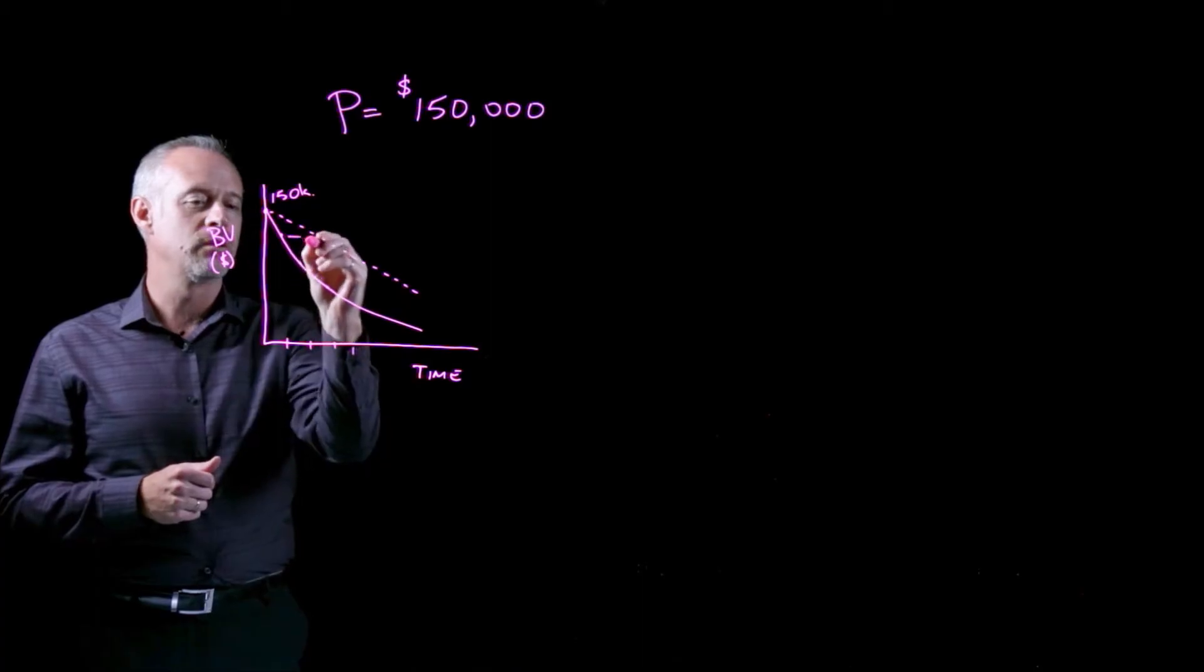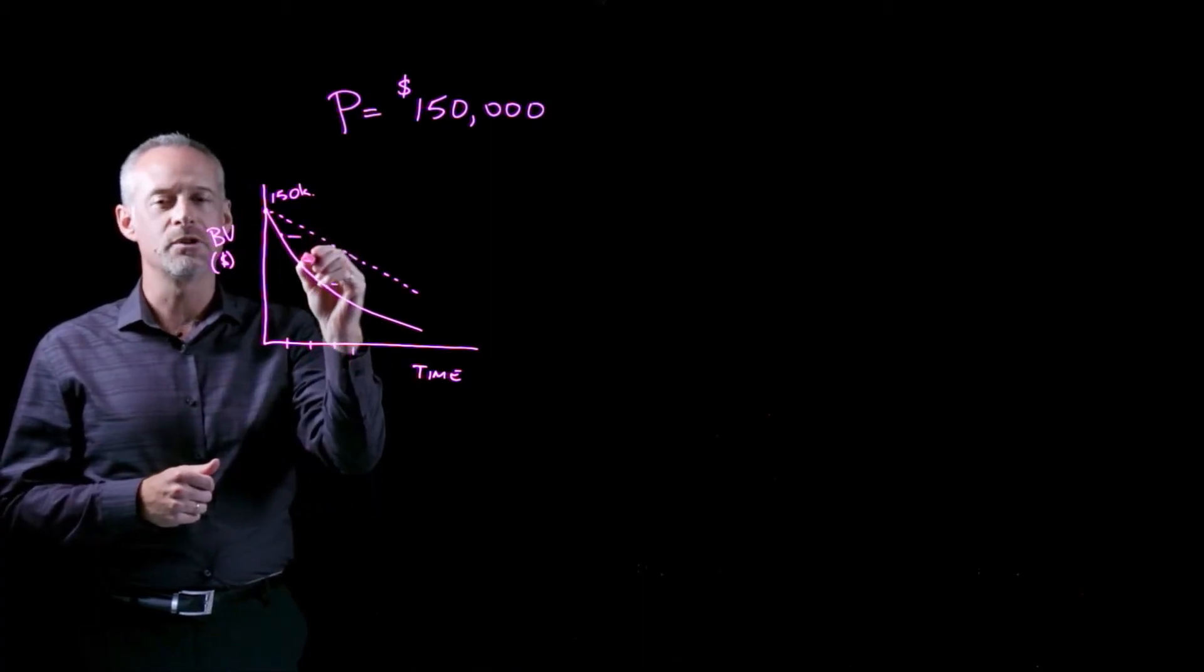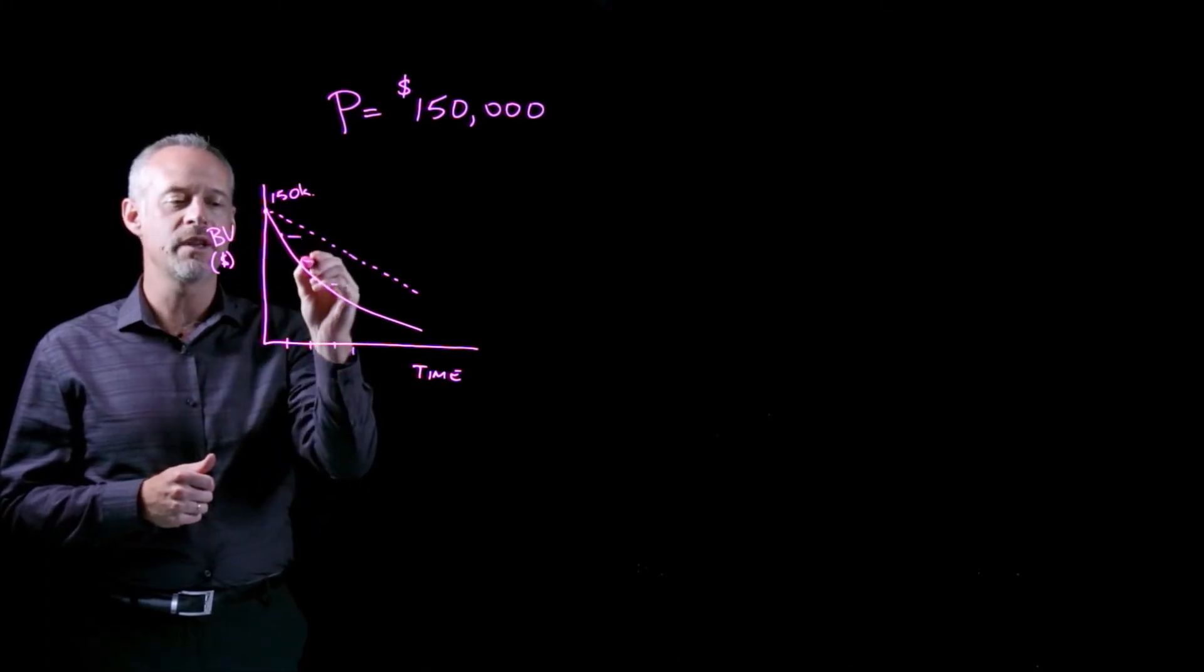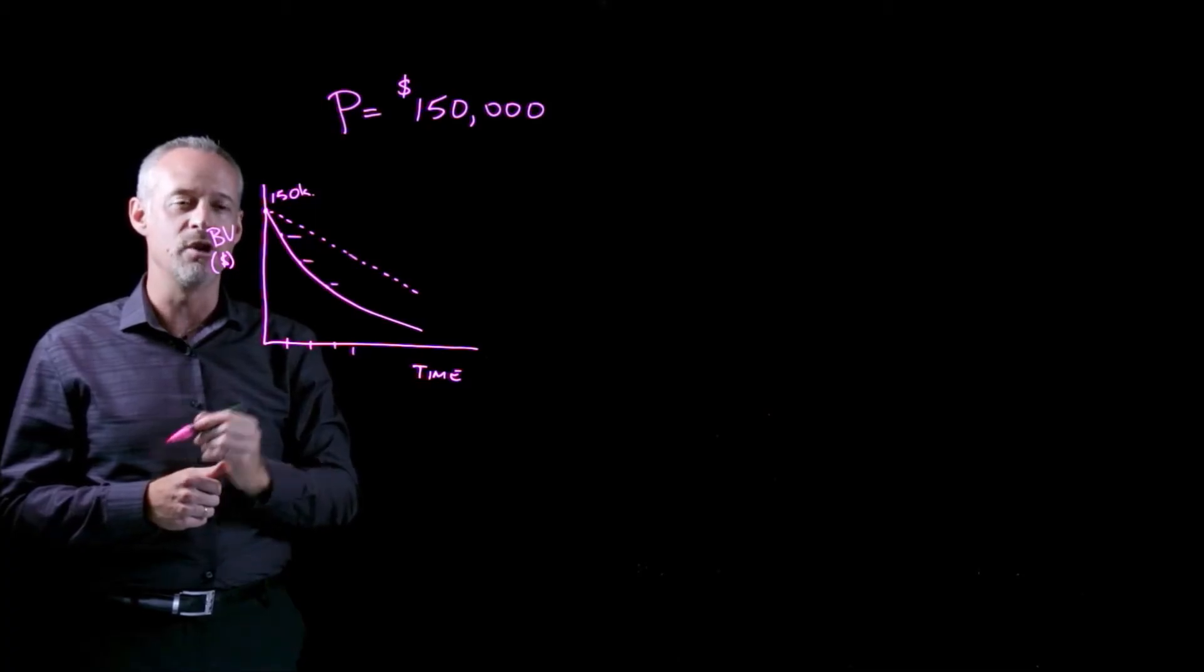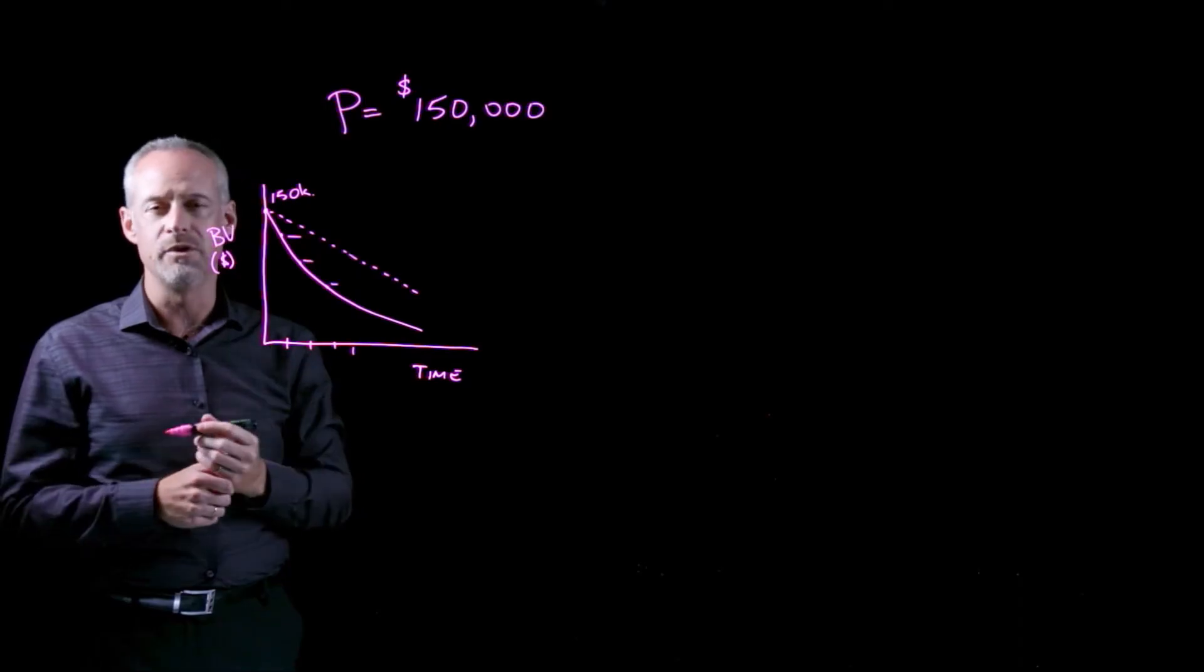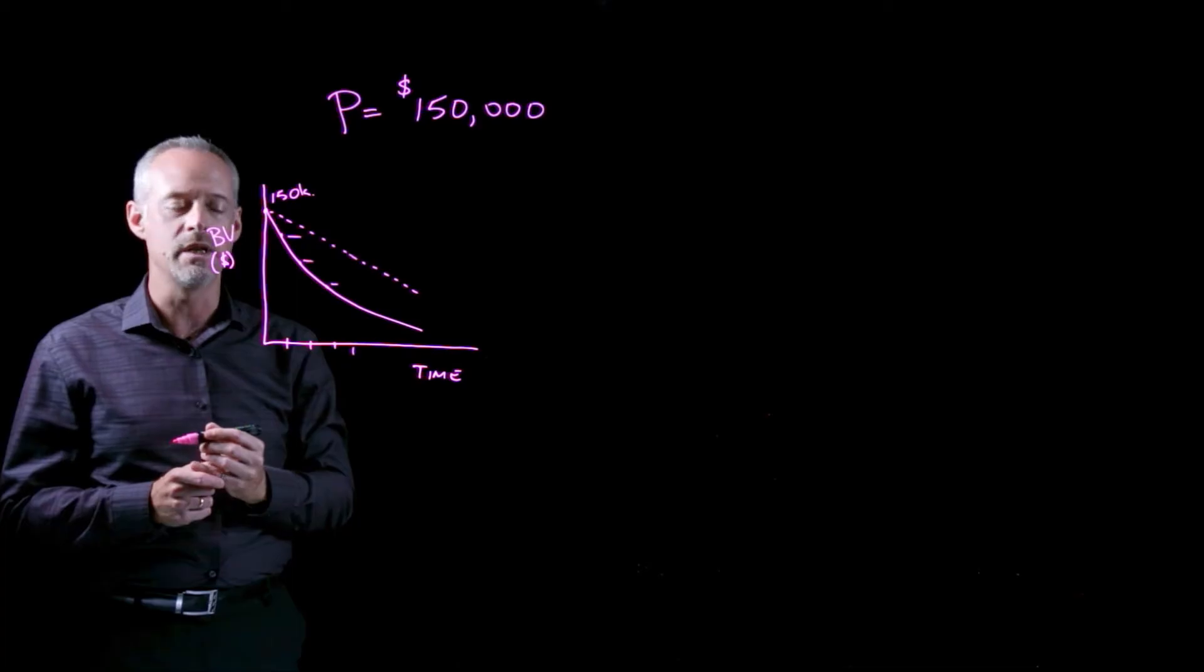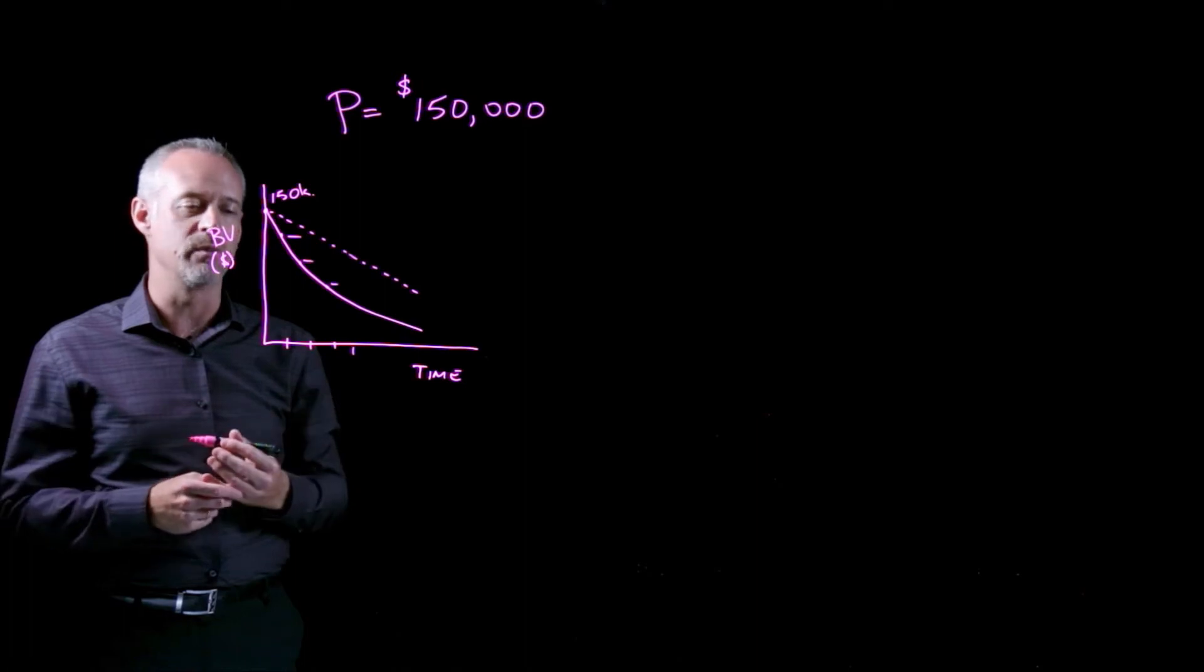you would end up with something that looks sort of like this, where each interval of time is associated with a particular depreciation expense. And this depreciation expense or loss in book value is a percentage of the book value at the beginning of the year or the end of the previous year. We almost always use years as the time frame or interval in depreciation problems. That's related to the accounting and financial statements of a company, which are prepared yearly.